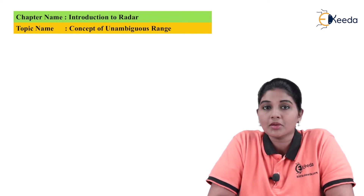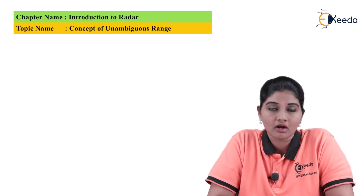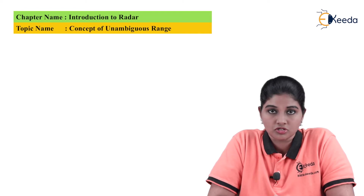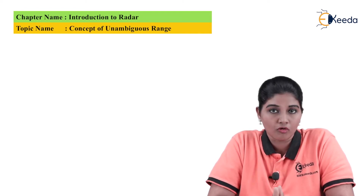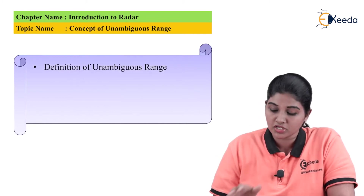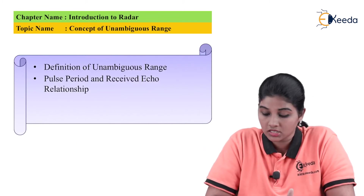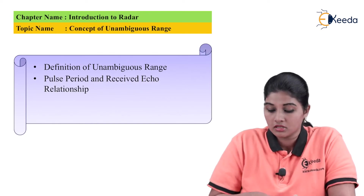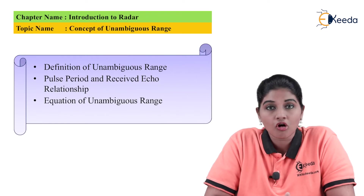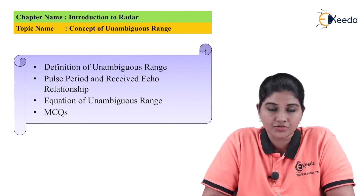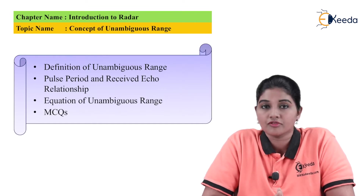In this video, we are going to talk about the elaboration of radar range and discuss the concept of unambiguous and ambiguous range. The points to be covered are: definition of unambiguous range, the pulse period and received echo relationship, the equation of unambiguous range, and finally some MCQs.